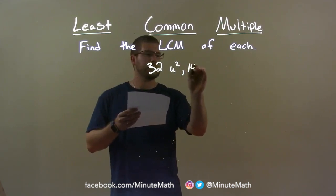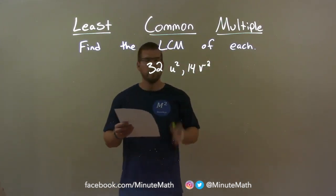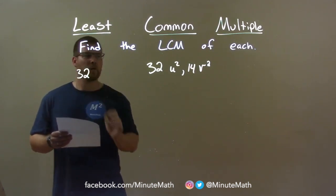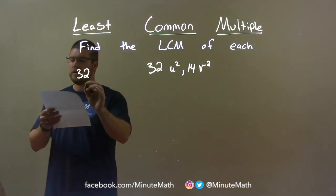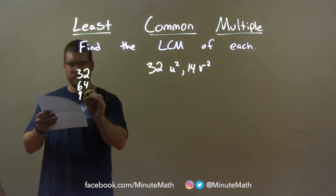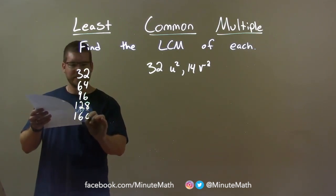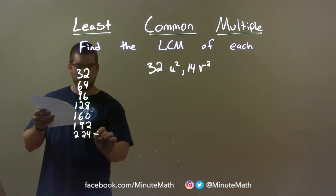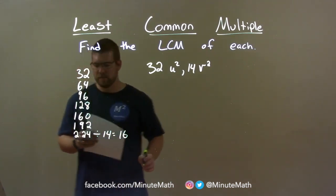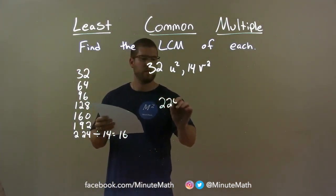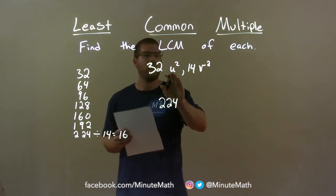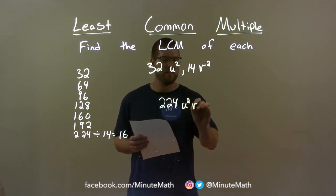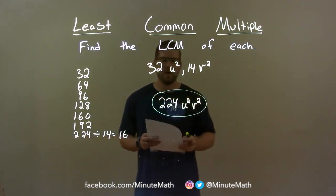32u squared and 14v squared. First I deal with my numbers — 32 and 14, with 32 being the largest. I go through the multiples of 32 to see which one is divisible by 14. 32, 64, 96, 128, 160, and 192 are not. The first one is 224 — that is the first one divisible by 14 evenly, and that's 16 times. So 224 is the number we're looking for. Now for the variables: we have two u's and two v's, so we bring them together — u squared and v squared. My final answer is 224u squared v squared.